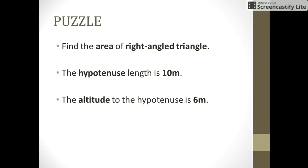In this puzzle you are given a right angle triangle with the following dimensions. The hypotenuse of the triangle is of the length 10 meters. The altitude drawn to the hypotenuse is of 6 meters. Can you find out the area of this right angle triangle?